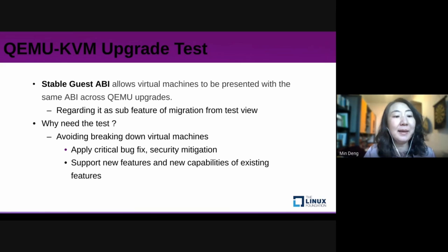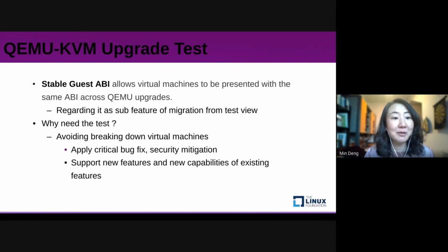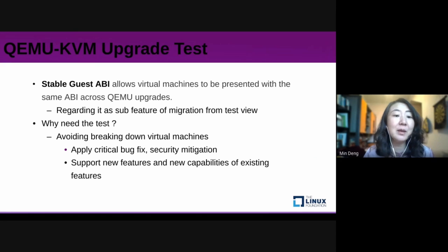What's Stable Guest ABI? Stable Guest ABI allows virtual machines to be presented with the same API across QEMU-KVM upgrades. From QE's perspective, it is regarded as a sub-feature of migration. When QEMU-KVM is upgraded to a new version, some aspects of the platform may change as new hardware capabilities are added. You need to make sure the two machines are actually compatible with each other. Stable Guest ABI means the hardware profile of the virtual machine should not change when QEMU-KVM is upgraded.